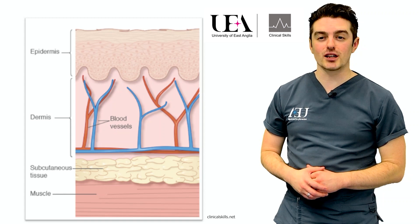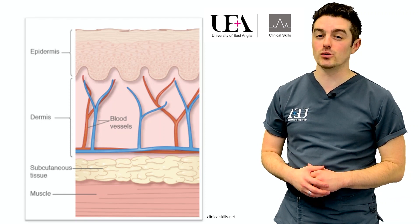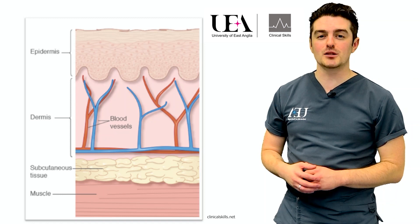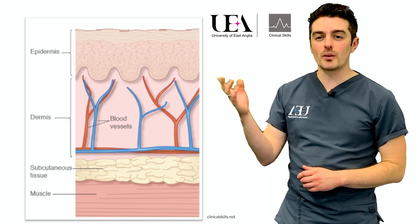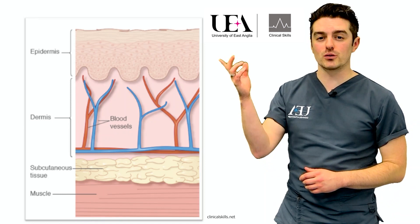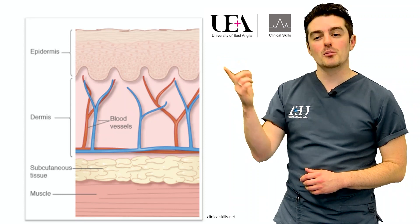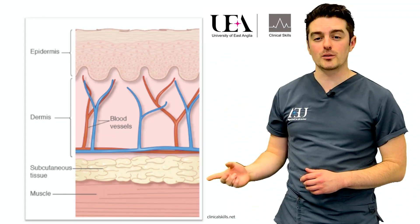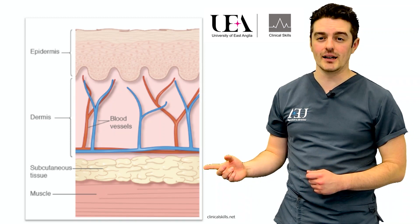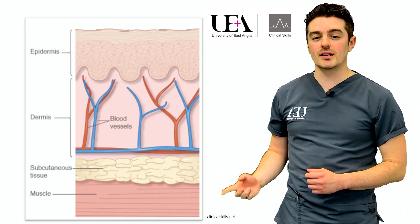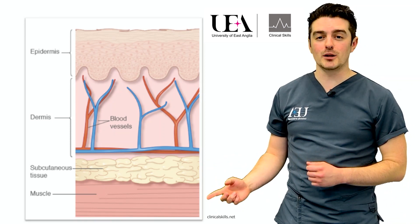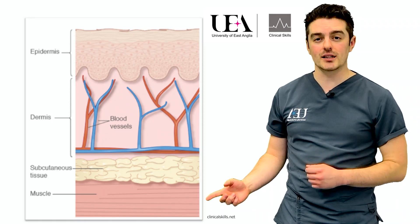When performing an injection it is important to have an awareness of the relevant anatomical landmarks. As you can see from this diagram, the skin is made up of different layers. The top and most superficial layer is the epidermis, below this is the dermis, below the dermis is the subcutaneous or primarily fatty layer, and below this is the muscular or intramuscular layer, which is the deepest and most invasive site that we inject into.